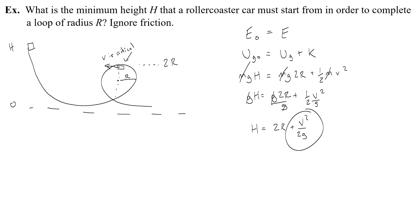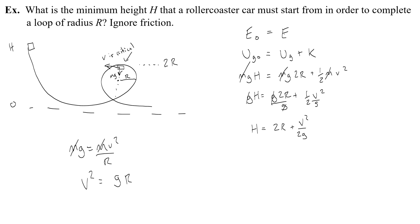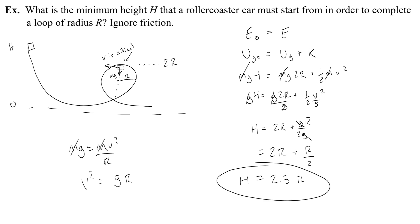Normally you'd be asked to find the height in terms of r, so let's do that. In order to turn v-squared over 2g into something with r in it, I need to remember the critical speed. At the top of the loop, only the weight force provides centripetal force: mg equals mv-squared over r, so v-squared equals gr. Substituting, I get 2r plus r over 2, which is 2.5r. That's the minimum height to complete the loop.